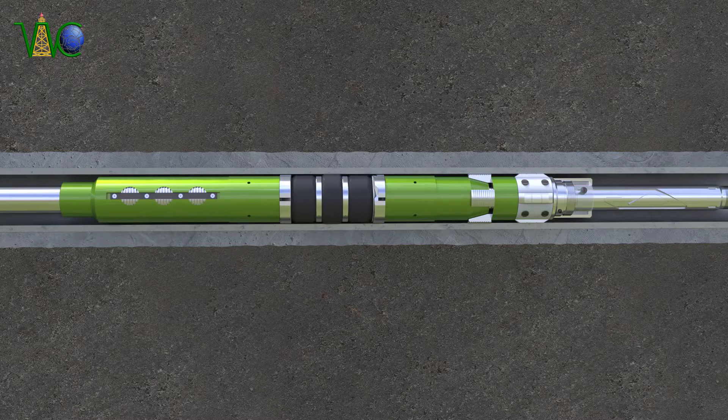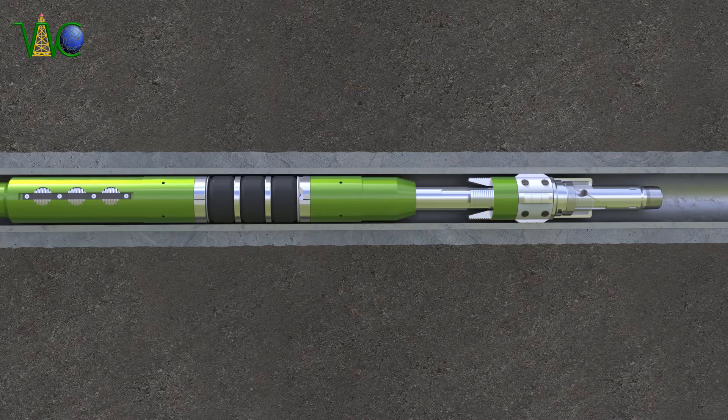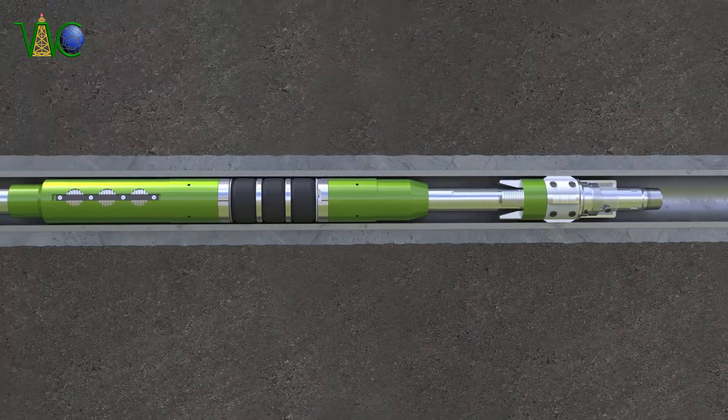To retrieve the packer, the tubing string is slowly pulled with the load exceeding the allowable tension of tubing until the packer is unset.